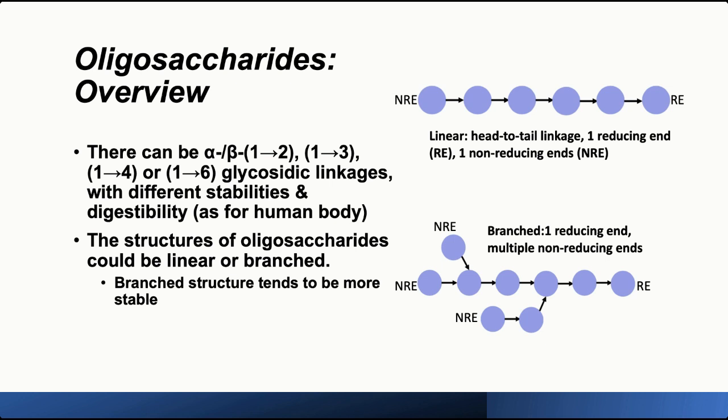The general structure of oligosaccharides can be linear or branched. As shown in the picture, the linear type is a head-to-tail linkage with one reducing end and one non-reducing end. The reducing end is a monosaccharide where the anomeric carbon has a free aldehyde group or free ketone group, always available for oxidation or other chemical reactions. The branched type has one reducing end and multiple non-reducing ends, and generally the branched structure tends to be more stable.